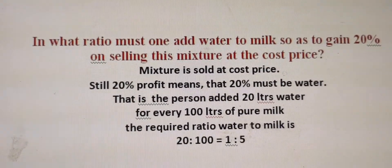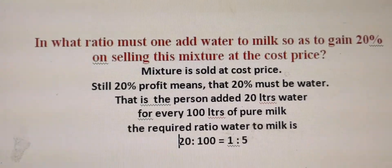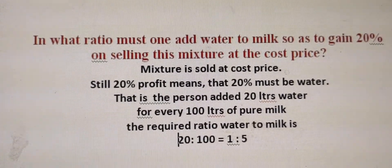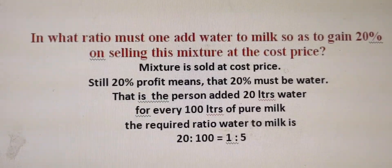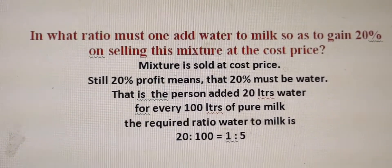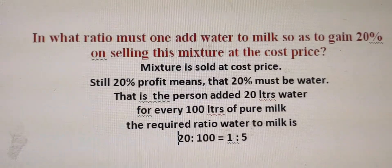That is, the person added 20 liters of water for every 100 liters of pure milk. So now the required ratio, that is water to milk, is 20 is to 100.